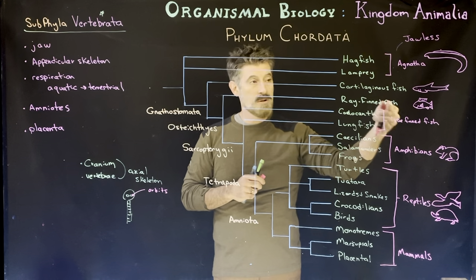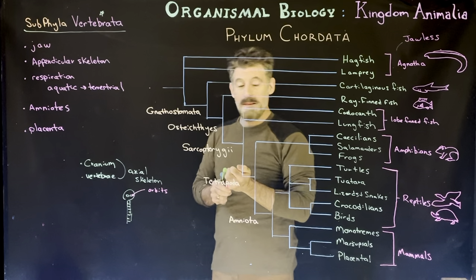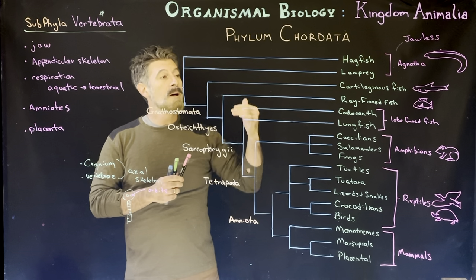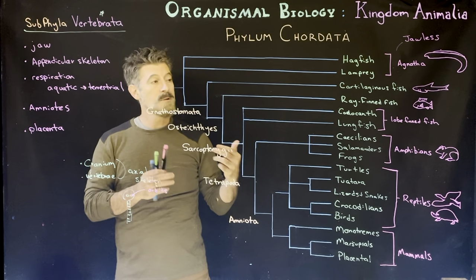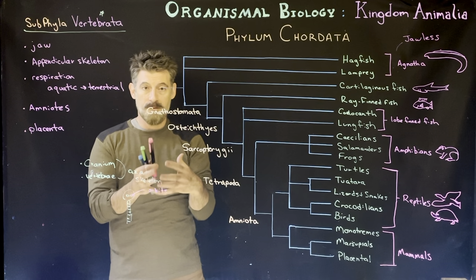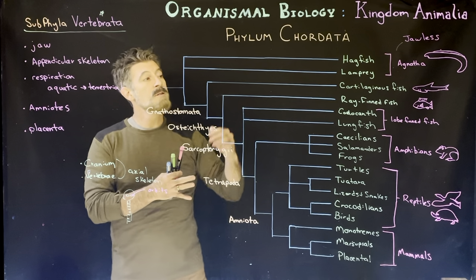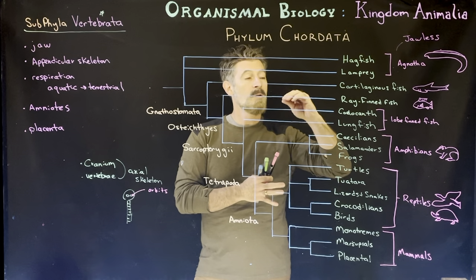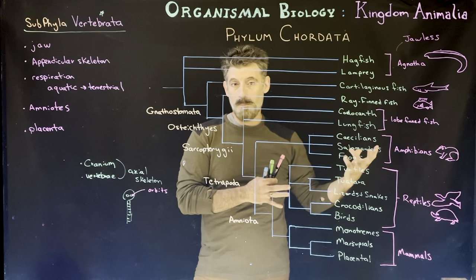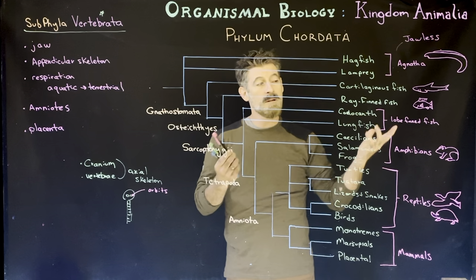Then we'll have some of the jawed fish, broken into a couple different groups. We're going to have cartilaginous fish, and when we talk about them we'll go into the details of bone development — what is actual bone, different types of bone, and the way bone is formed. One way is to produce cartilage first and then replace it with bone. The cartilaginous fish lay down an original cartilaginous skeleton that is just never replaced with true bone, giving advantages in weight and flexibility.